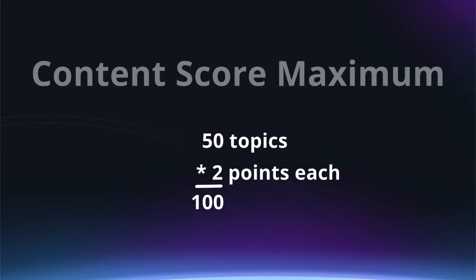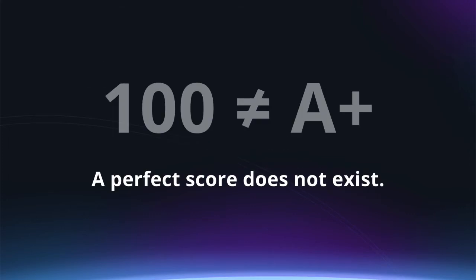Content score is calculated by adding the number of mentions for each related topic. Because there's a maximum of two points for each related topic and there are 50 related topics in the list, the theoretical maximum content score is 100, or 50 times 2. But don't let that maximum fool you. While your school teacher may have given you an A plus and that made you feel good, in the real world it's all relative. There's always room for improvement.